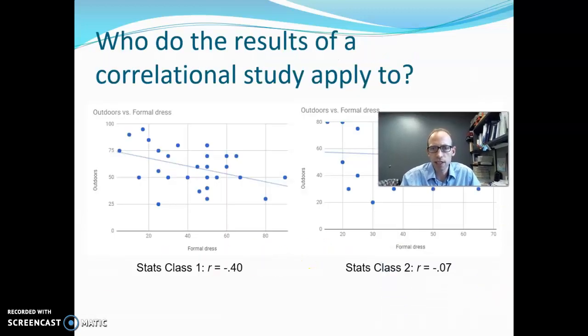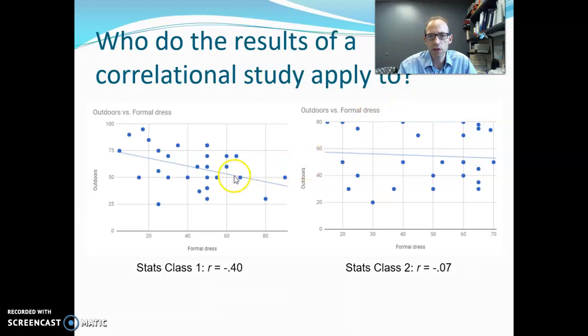When we do a correlation, who do those results apply to? So this is data from two different stats classes. And they were curious whether dressing formally, so coming to class dressed formally, was connected with how much time a person spent outdoors. The idea may be if you're always dressing up, maybe you're not so much a nature-y person. And so we got this negative correlation. And that was some good evidence that, okay, maybe the more people dress formally, the less they like to spend time outdoors.